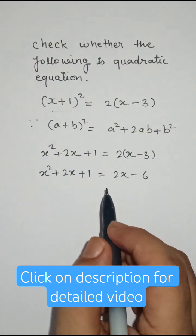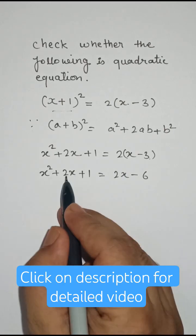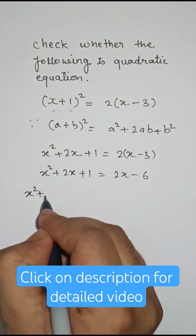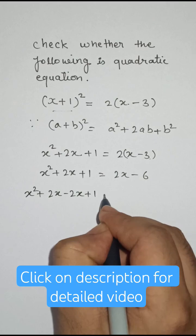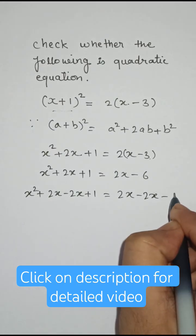Moving terms to one side: x² + 2x - 2x + 1 = 2x - 2x - 6.